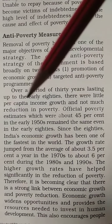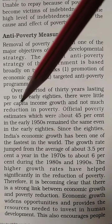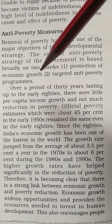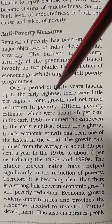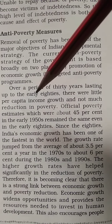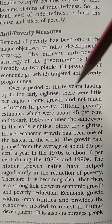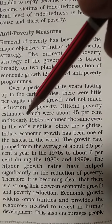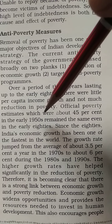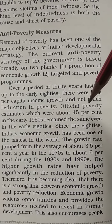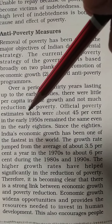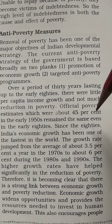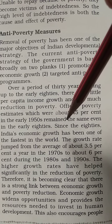Over a period of 30 years lasting up to the early 80s — yanni ki 1950 se leke 1980s tak — there was little per capita income growth, jho prati vikti aay me vriddi hai, woh bhot kam hoi hai, and not much reduction in poverty, gribi me bhi jyadha kami nahi aai. Official poverty estimates, which were about 45 percent in the early 90s, remained the same through early 1980s.